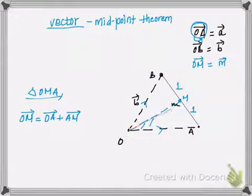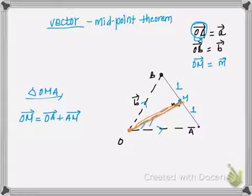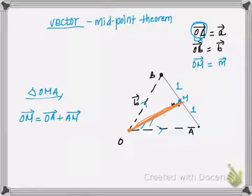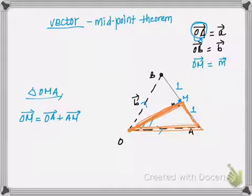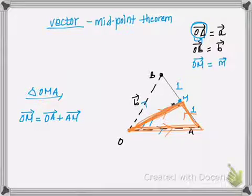This means: starting from point O, going to point O to M is the same as going from O to A and then from A to M. So I can write vector OM is equal to vector OA plus vector AM. This is what the triangle law of vector addition tells us.